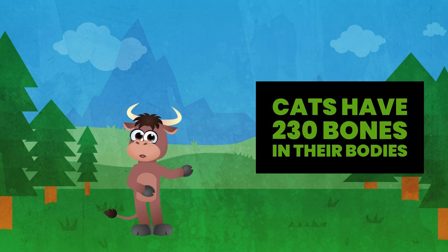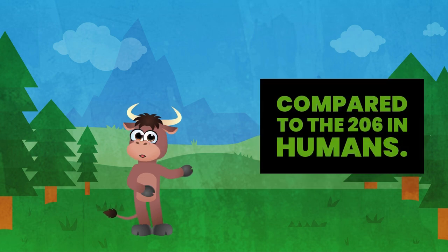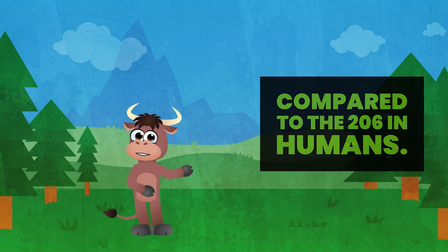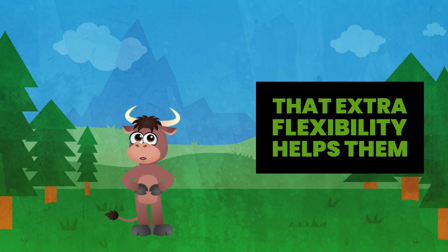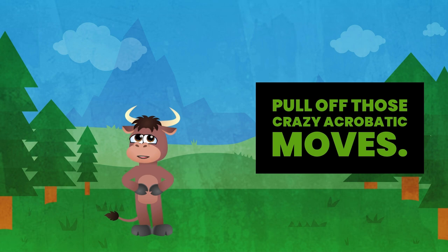Cats have 230 bones in their bodies, compared to the 206 in humans. That extra flexibility helps them pull off those crazy acrobatic moves.